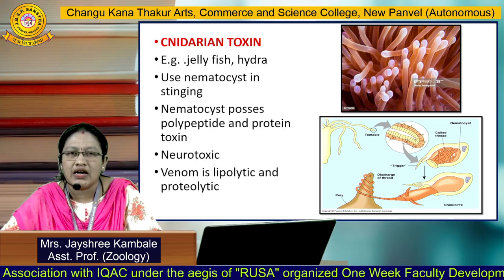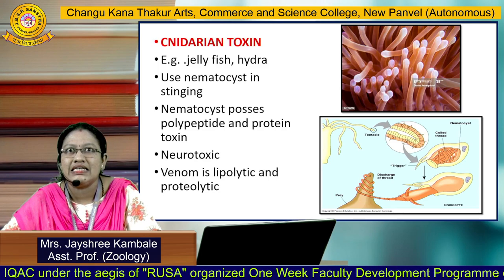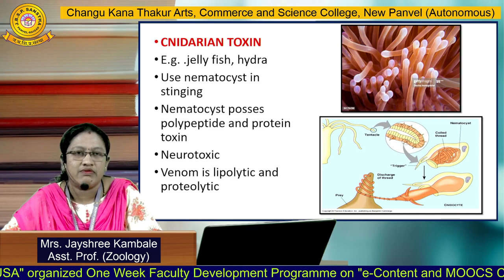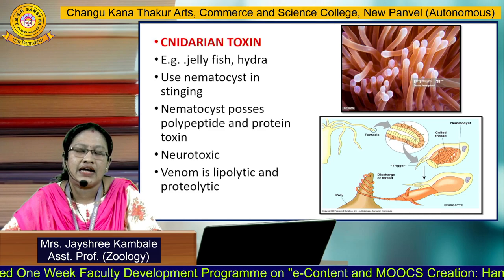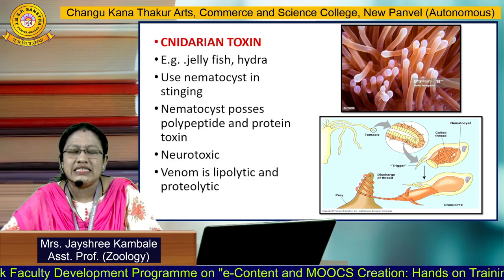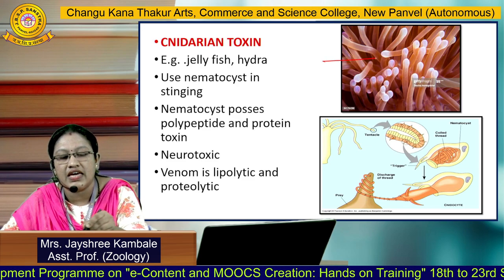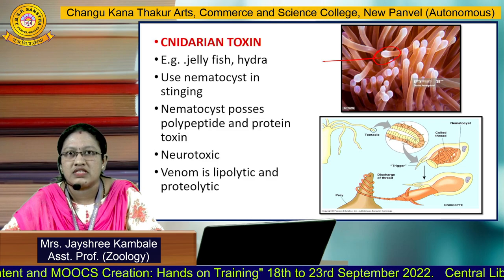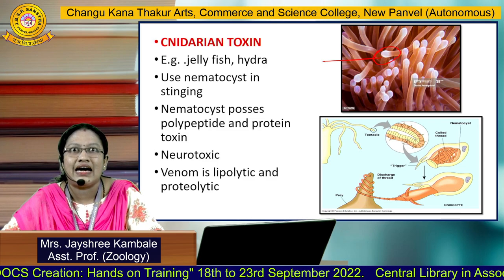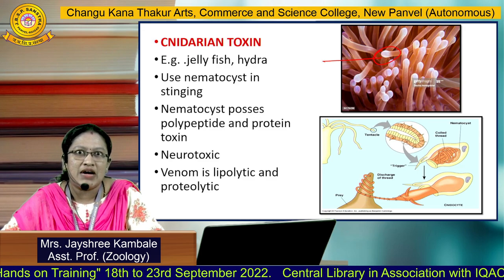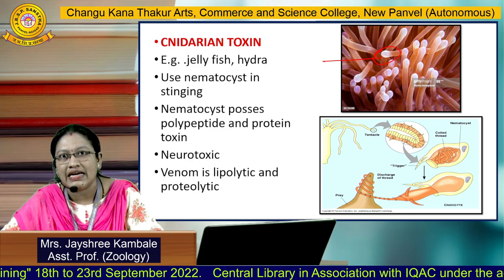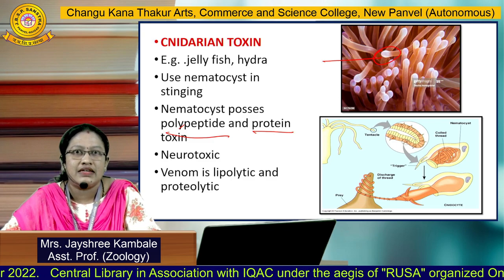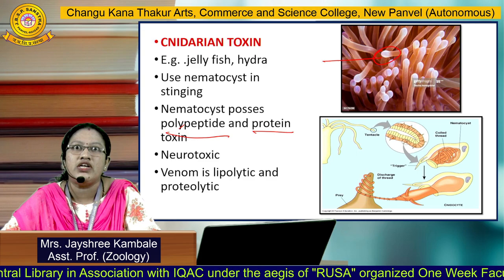We are going to study three examples. The first is the Cnidarian toxin. Cnidaria is the phylum which mainly contains invertebrate organisms — examples include jellyfish and hydra. In Cnidaria, they have tentacles, and at the tip of their tentacles they possess a specialized cell called a nematocyst. These nematocysts are used in the stinging operation and possess a toxin which mainly consists of polypeptide and protein. The toxin produced by Cnidaria is basically neurotoxic, meaning it affects the nervous system.